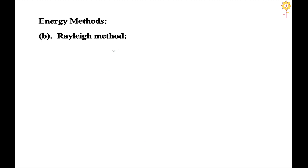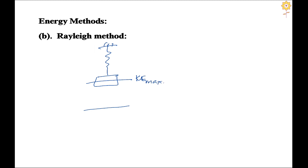Rayleigh's method is a special case of the energy method. We compare the energy at two positions: when the mass is at its mean position and when it is at its extreme position. At the mean position, kinetic energy is maximum because velocity is maximum, and potential energy is zero because there is no deformation from the SEP. At the extreme position, kinetic energy is zero because the mass is momentarily at rest changing direction, and potential energy is maximum because spring deformation is maximum.